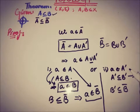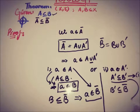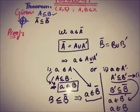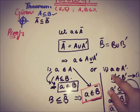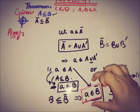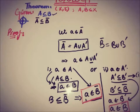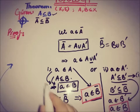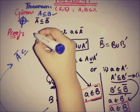So if a ∈ A', then by A' ⊆ B' we get a ∈ B', and by B' ⊆ B̄ we get a ∈ B̄. In both cases — whether a ∈ A or a ∈ A' — we have shown a ∈ B̄. Therefore, we have proved that Ā ⊆ B̄.